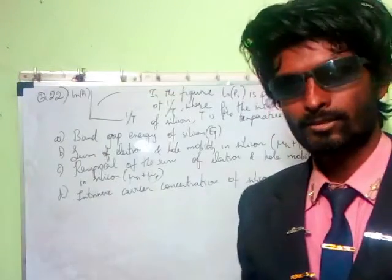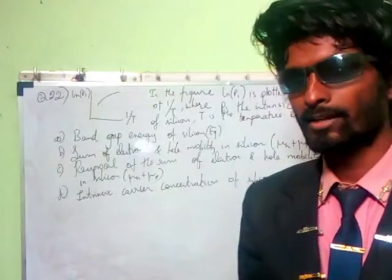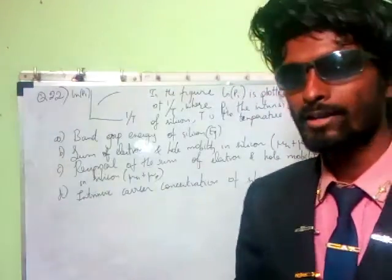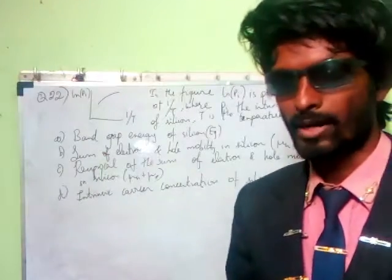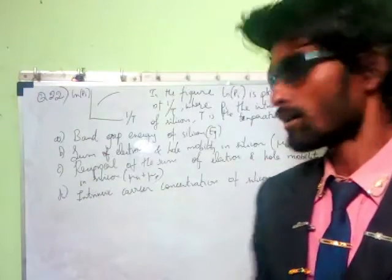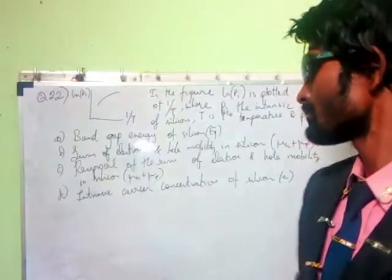In question 22, they give a small diagram with intrinsic log rho_i plotted against 1/T (one by time), and they provide several options to analyze.